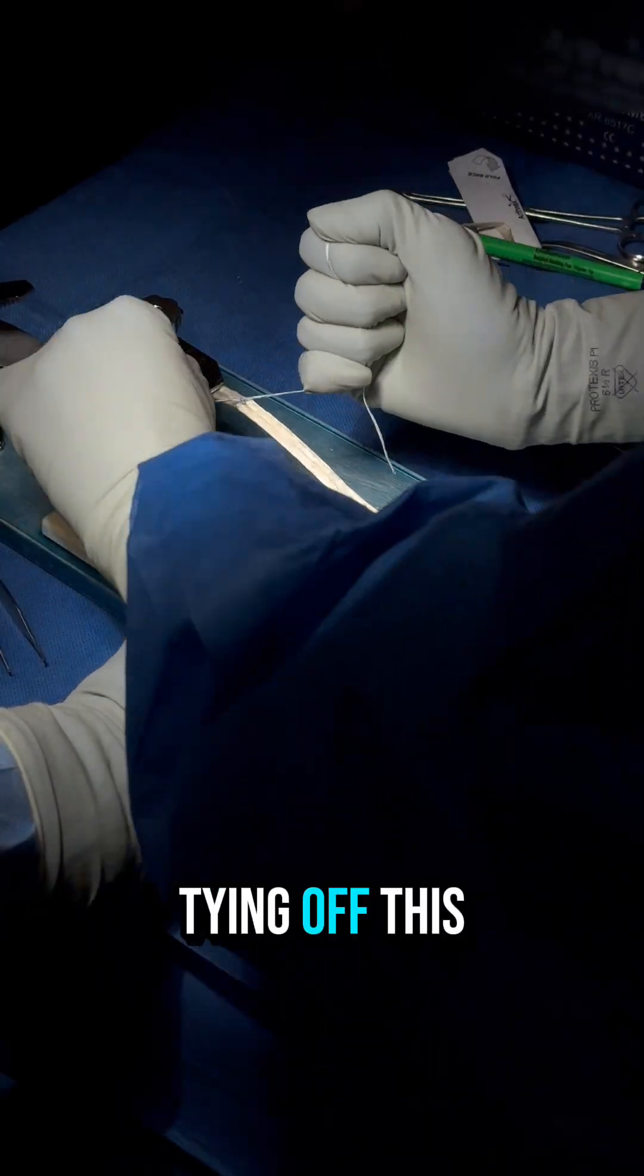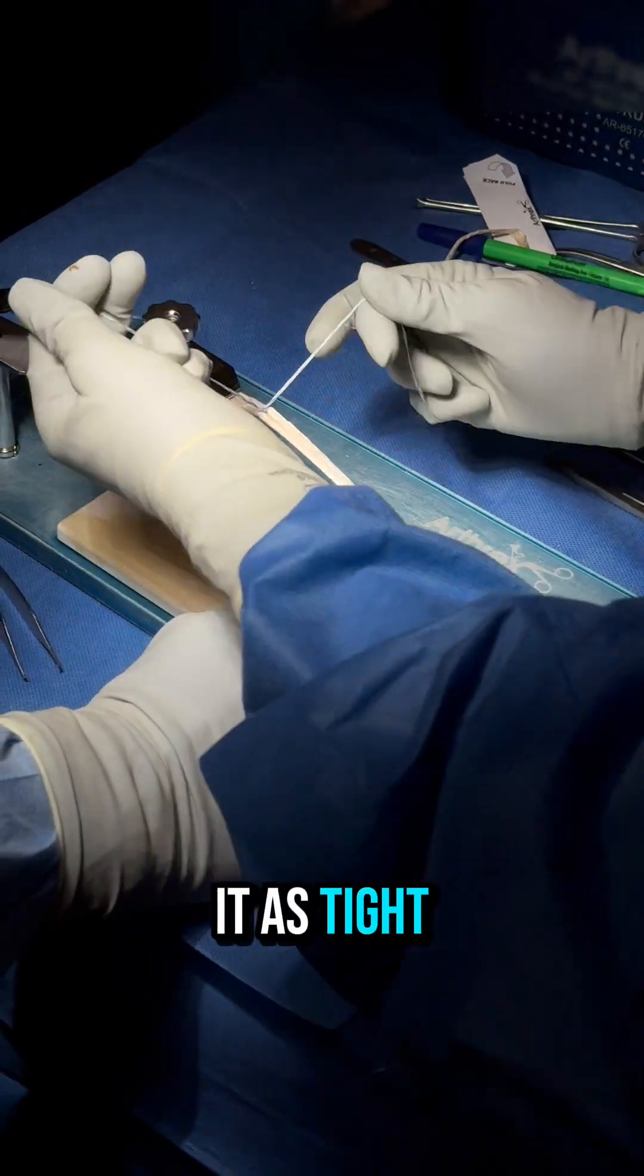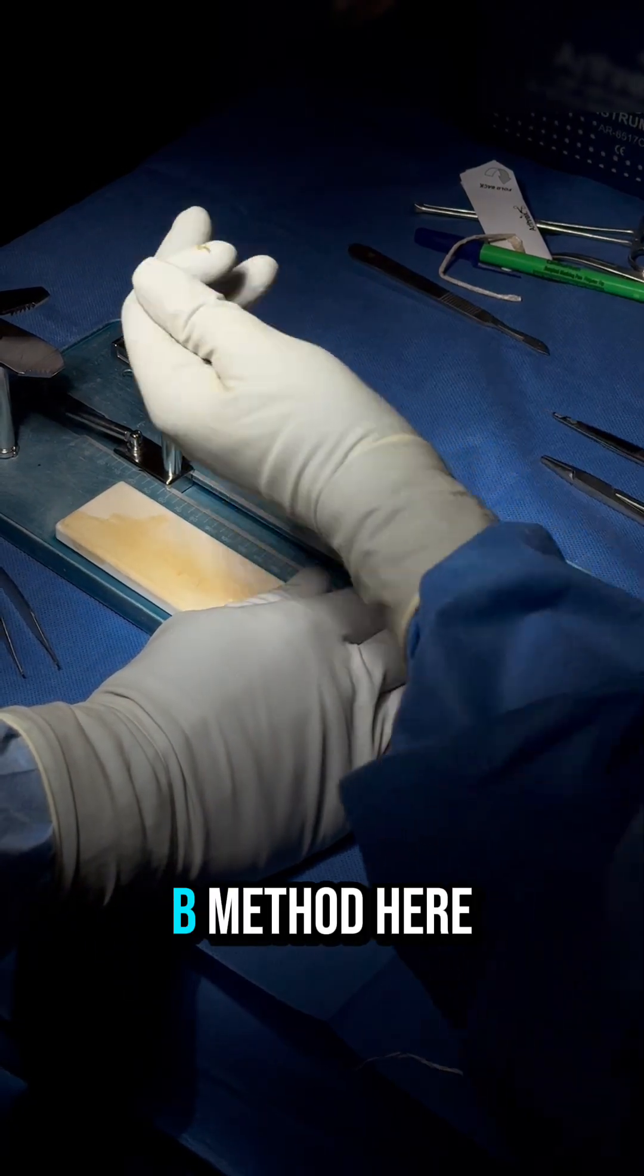It's important when tying off this end to make it as tight as possible, and we use an AAB method here.